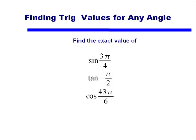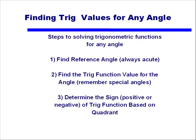Let's look at problems like this: find the exact value of sine of 3π/4, tangent of negative π/2, and cosine of 43π/6. The steps we're going to follow are exactly like the ones we followed when we had our angles given in degrees. We're going to find the reference angle — that's always an acute angle — find the trig function value for that reference angle, and finally determine the sign, whether the trig function is positive or negative, based on the quadrant that the terminal side lands in.